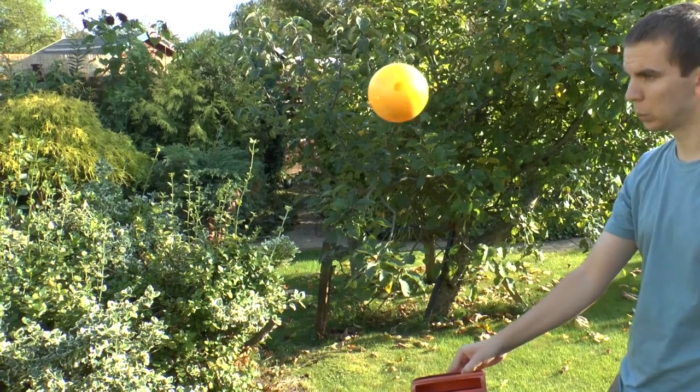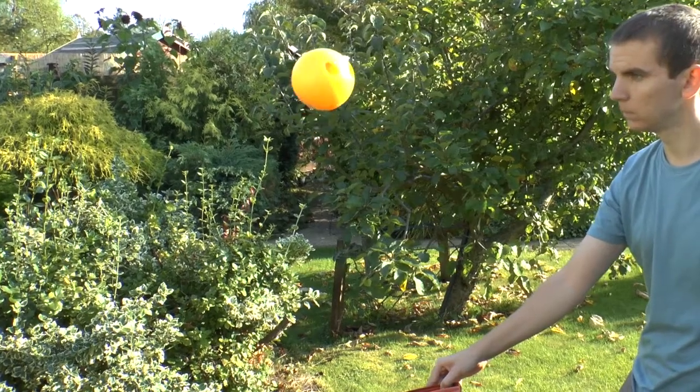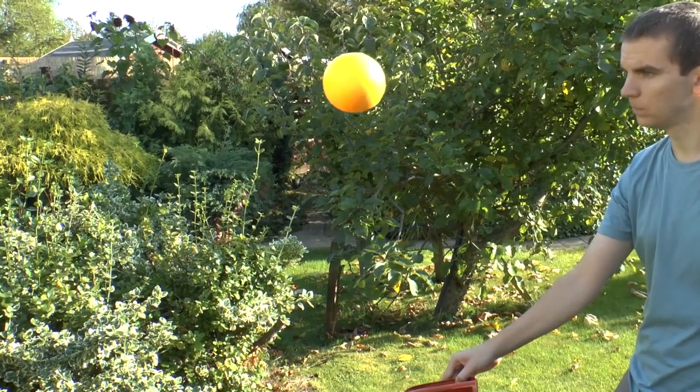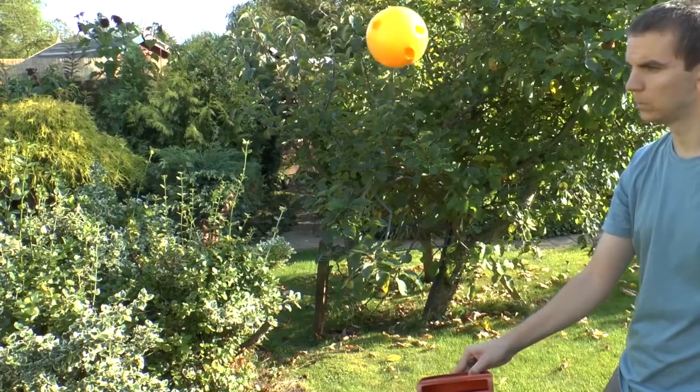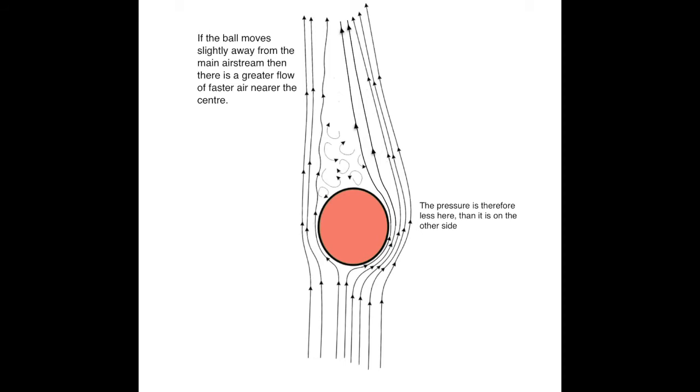One possible explanation is using Bernoulli. The explanation goes something like this: if the ball moves slightly to one side of the air column then the air travelling around it will be faster nearer the centre of the column. The pressure therefore in this faster air will be less than it is on the other side and the ball will be pushed by this higher pressure back towards the centre of the column. Other explanations are available.